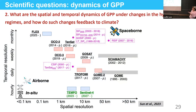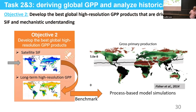Once the SIF-GPP mechanistic relationship is validated, I can use this to derive the spatial and temporal dynamics of GPP flux. This figure shows past, current, and future SIF observing capabilities. The substantially increased number of space-borne SIF sensors offers an opportunity to utilize satellite SIF to derive global, high-resolution, long-term GPP data sets. Another task is to utilize the GPP data set I derived as a benchmark to analyze the historical simulation patterns of process-based models and identify which model has the best GPP estimates.